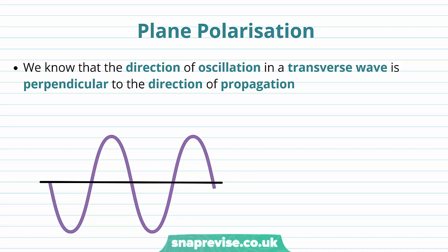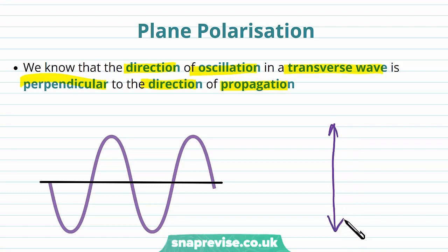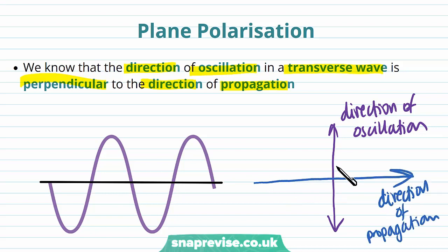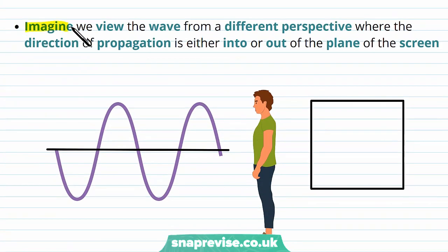To understand what we mean by a polarized wave, we know that the direction of oscillation in a transverse wave is perpendicular to the direction of propagation. For this wave, the direction of oscillation is up and down the page, and the direction of propagation is perpendicular to that — both are perpendicular to each other. When defining the direction of propagation, we define it as one direction, making sure it's perpendicular to the direction of oscillation.